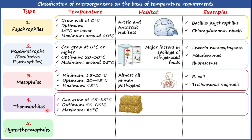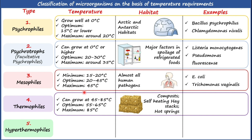The optimum temperature supporting thermophile growth is 55 to 65°C, with a maximum of 85°C. Thermophilic microorganisms can be found and isolated from compost, self-heating haystacks (as shown in the picture), and hot water springs.